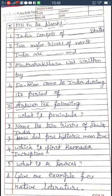Short answer questions for paper two: What is a peninsula? A landmass with three sides covered by water and one side connected to land is called a peninsula. Name two rivers of South India — there are many: Krishna, Kaveri, Tungabhadra — write any two.